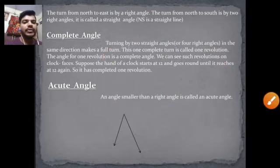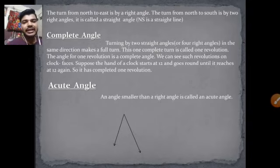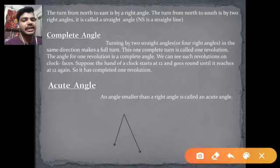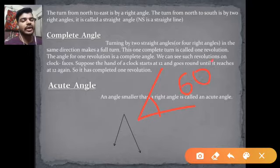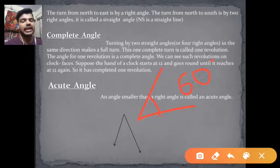Now, the acute angle. An acute angle is less than 90 degrees. Any angle less than 90 degrees, for example 60 degrees, is called an acute angle.